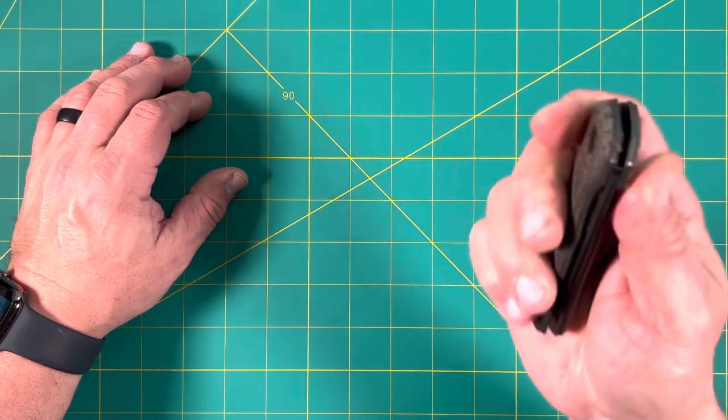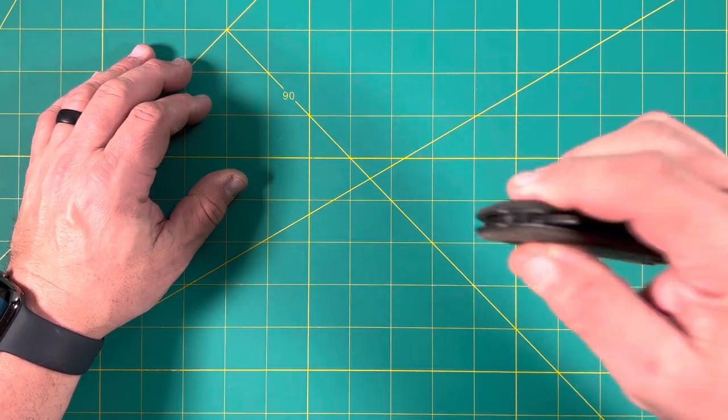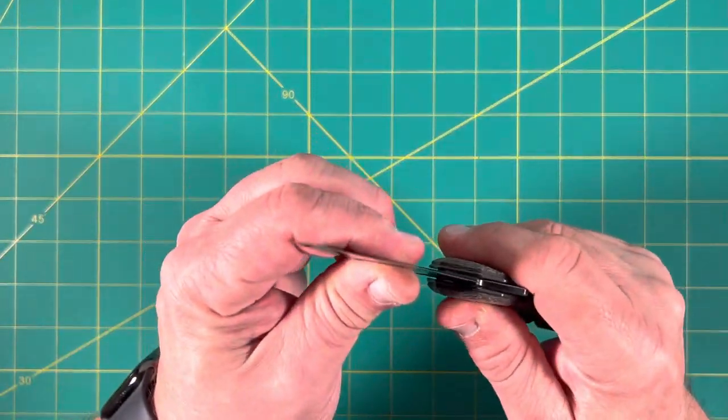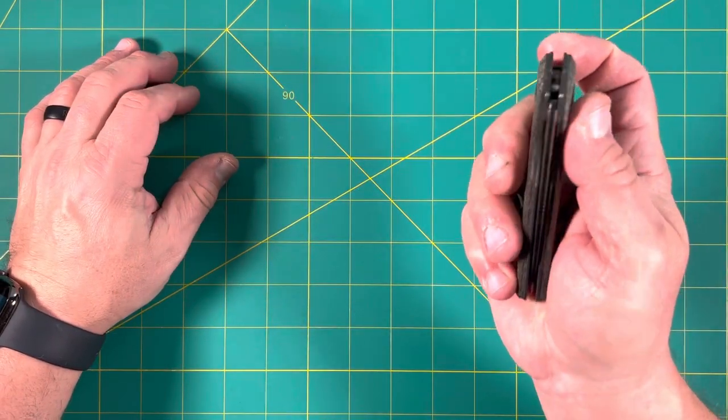Let's see the action on that. There we go. Yep. We can open it like that. Let's see. Any blade rock? Nope. None there. It's solid. Goes down nicely.